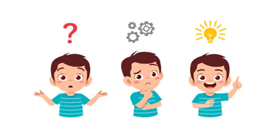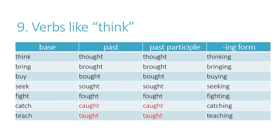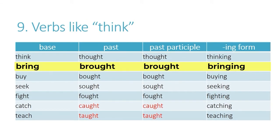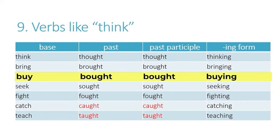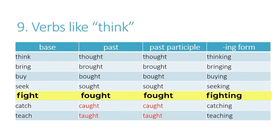Verbs like 'think' use 'ought' or 'aught' in the past and past participle. Here are some examples: think, thought, thought. Bring, brought, brought. Buy, bought, bought. Seek, sought, sought. Fight, fought, fought.